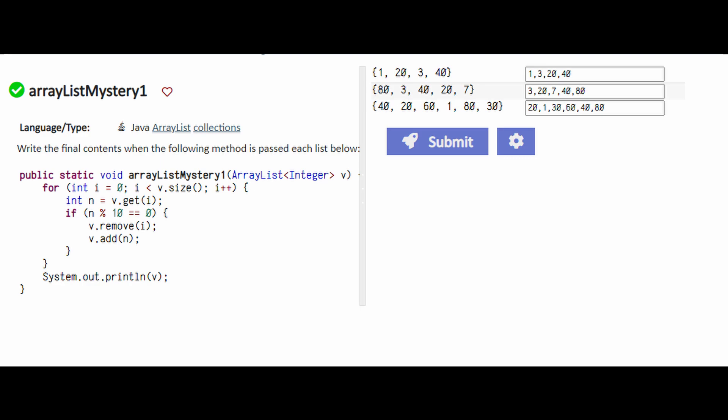For ArrayListMystery1, we're asked to write the final contents when the following method is passed each list below. For the first one, we're given 1, 20, 3, and 4.